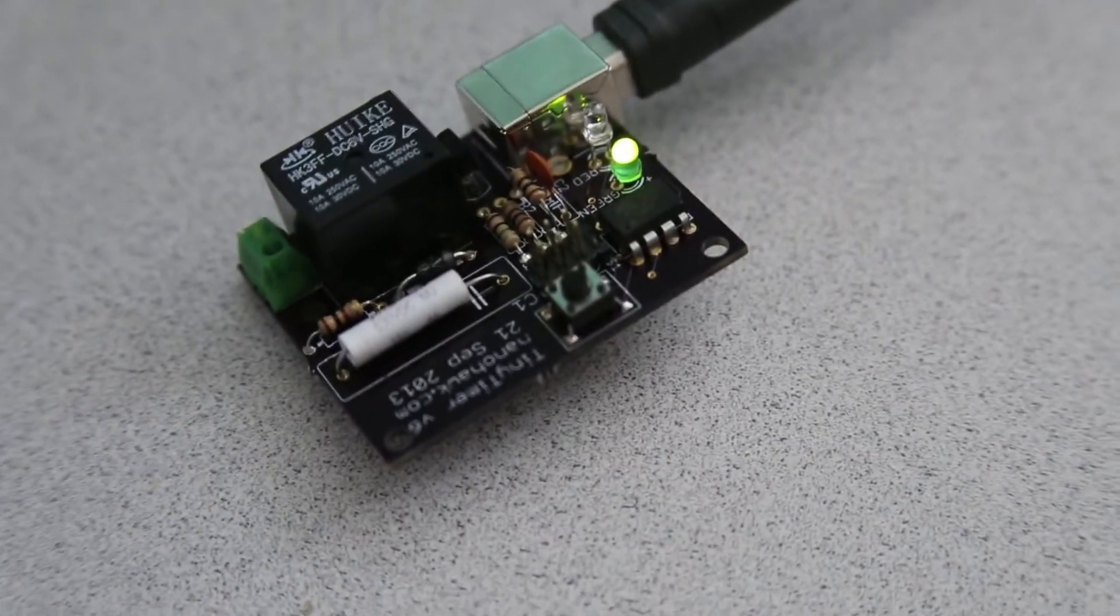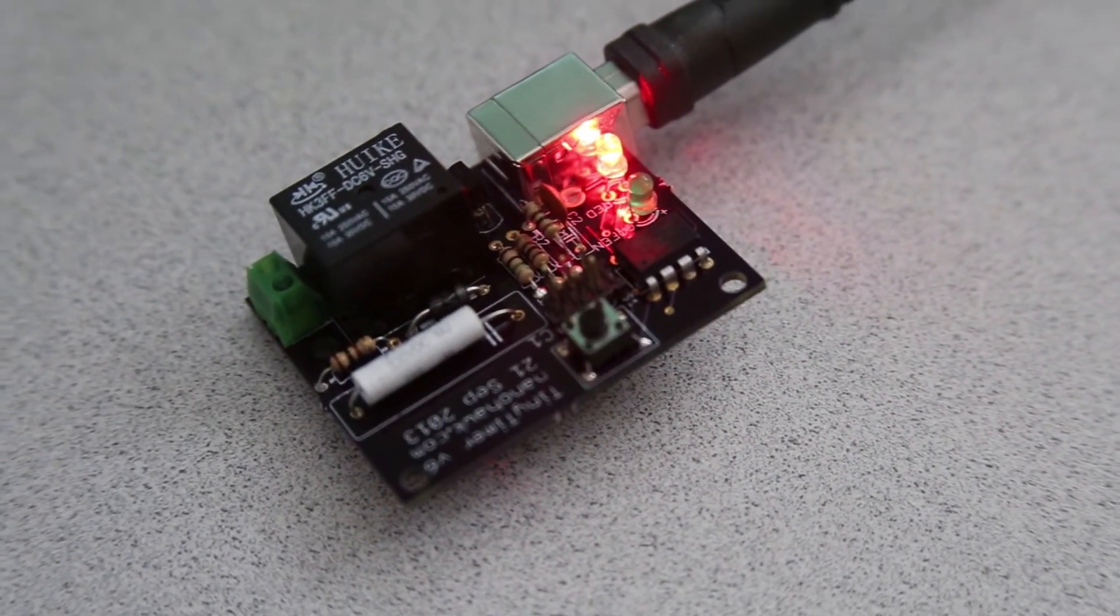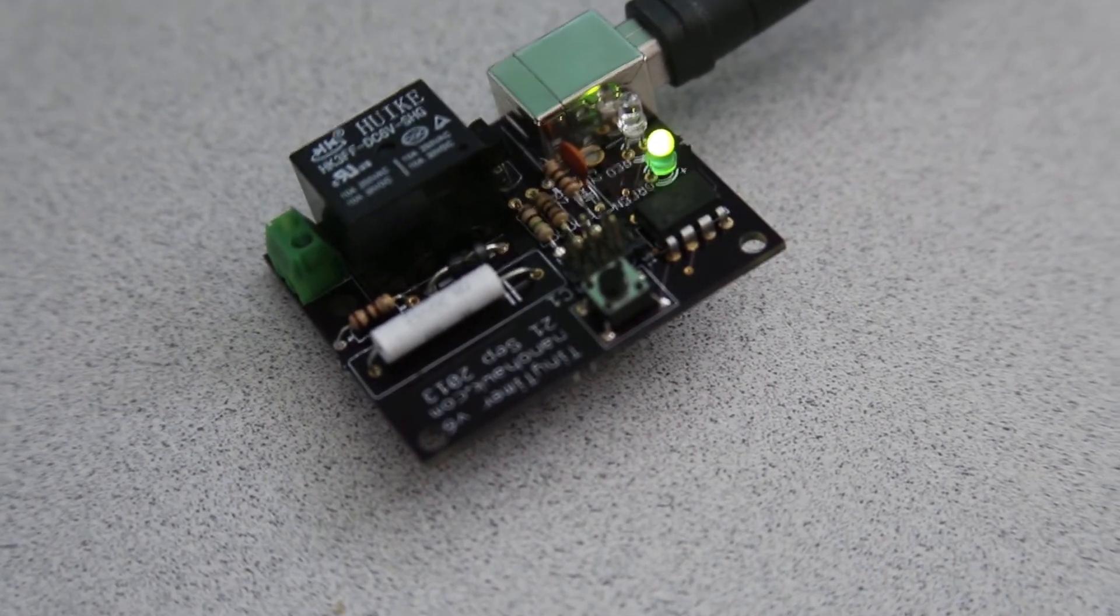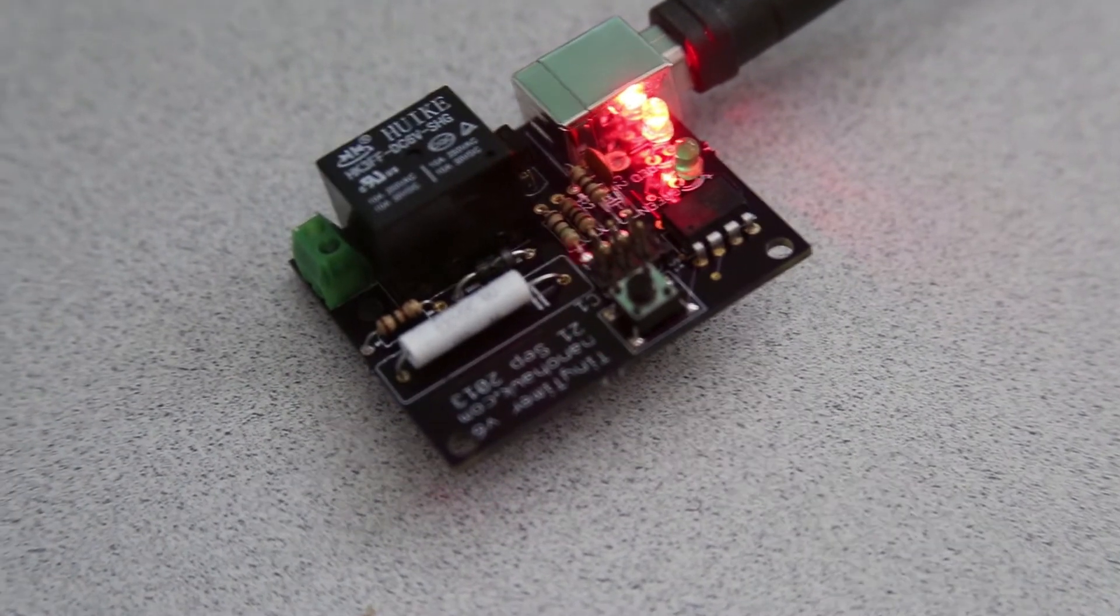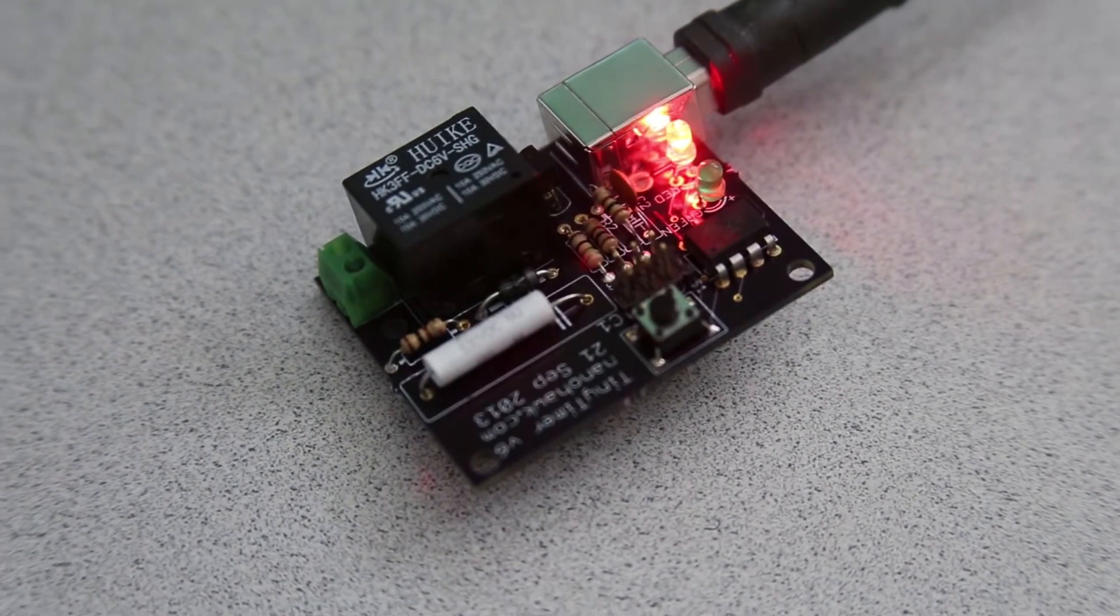Hi, you're looking at Tiny Timer Classic Edition, and this is a complex cycle timer. Currently it's running a cycle that is about two seconds on and three seconds off. The green LED indicates that the relay has been energized.